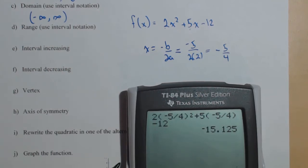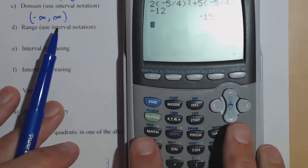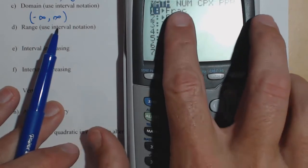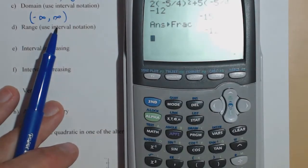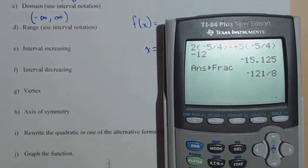Now because I have the x coordinate in a fraction, I may want this in a fraction too. So what I'm going to do, let me show you this. If I go to math, fraction, it puts that answer in as a fraction. So now we have our vertex.